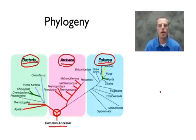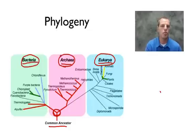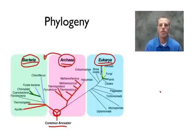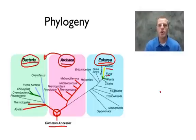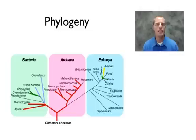Bacteria are prokaryotes — organisms that don't have a nucleus. The archaea are organisms that survive in harsh conditions. They're similar in some ways to bacteria but not really. Back when I was in school, these two groups were combined into a group called Monera, but around 1990, scientists adapted to a three-domain system and recognized archaea as a totally different group. Then you also have the Eukarya domain, which consists of animals like us, fungi, plants, and things like slime molds, which would be protists.